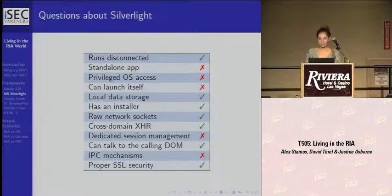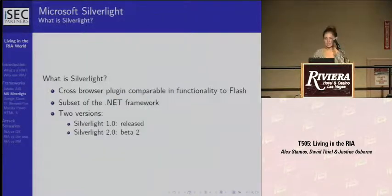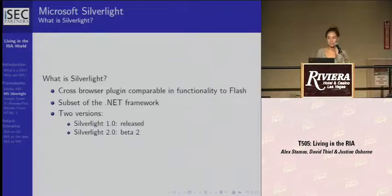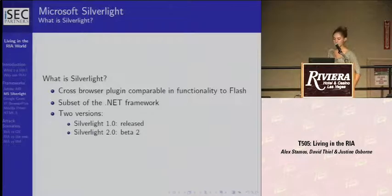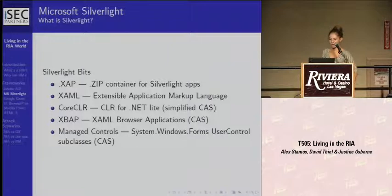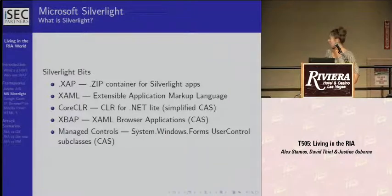So I'm just going to give a brief overview of Silverlight. Silverlight is a browser plug-in comparable in functionality to Flash. It claims to be cross-platform, but currently Linux support is left as an exercise to the community. It supports a subset of the .NET framework. There are two versions — Silverlight 1 has been released, and Silverlight 2 is in beta. Both use XAML to render the UI. XAML stands for the Extensible Application Markup Language. Silverlight 1 uses JavaScript for dynamic content.